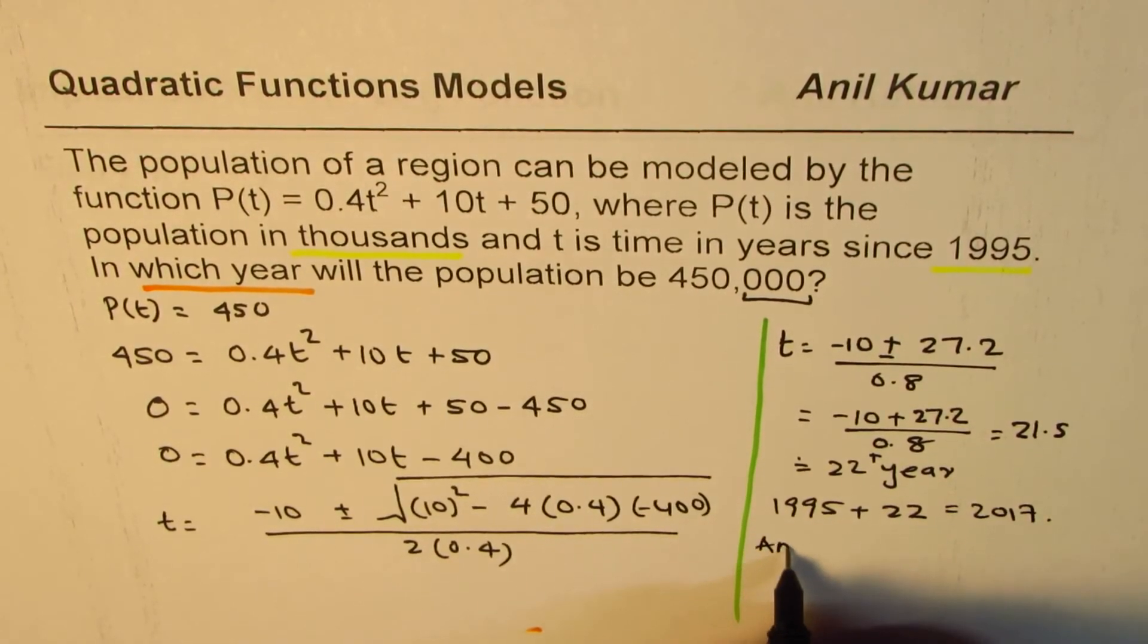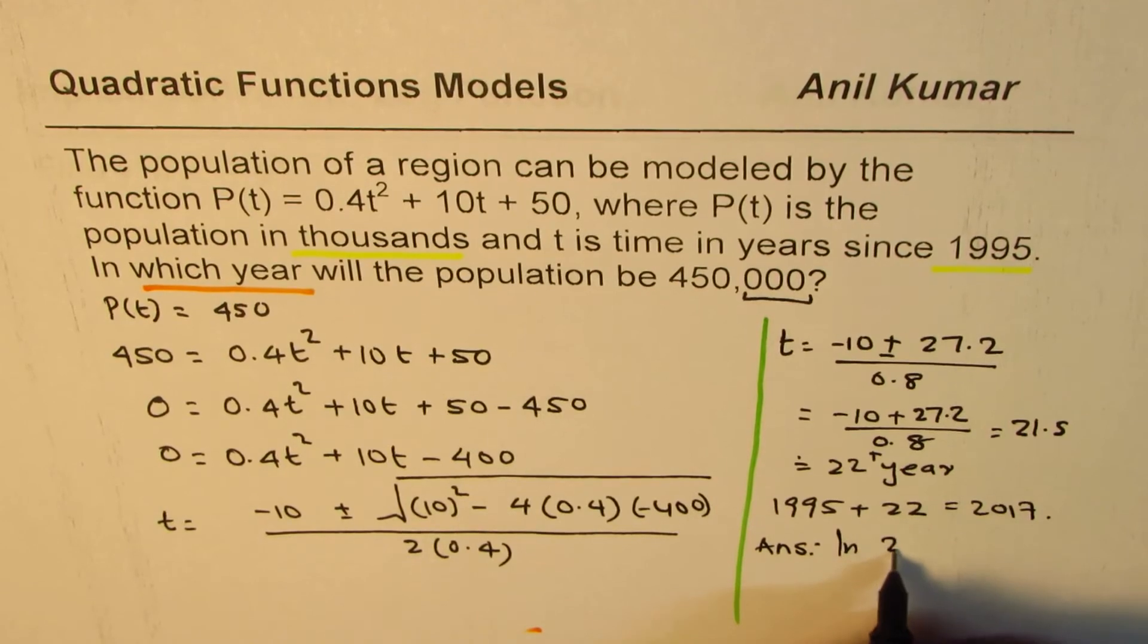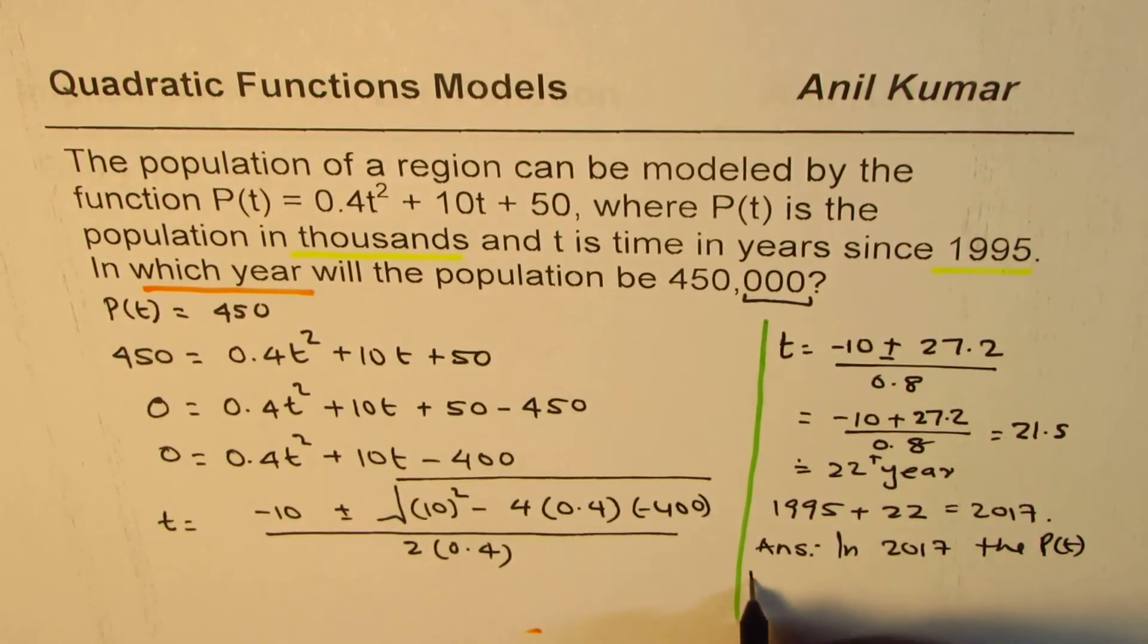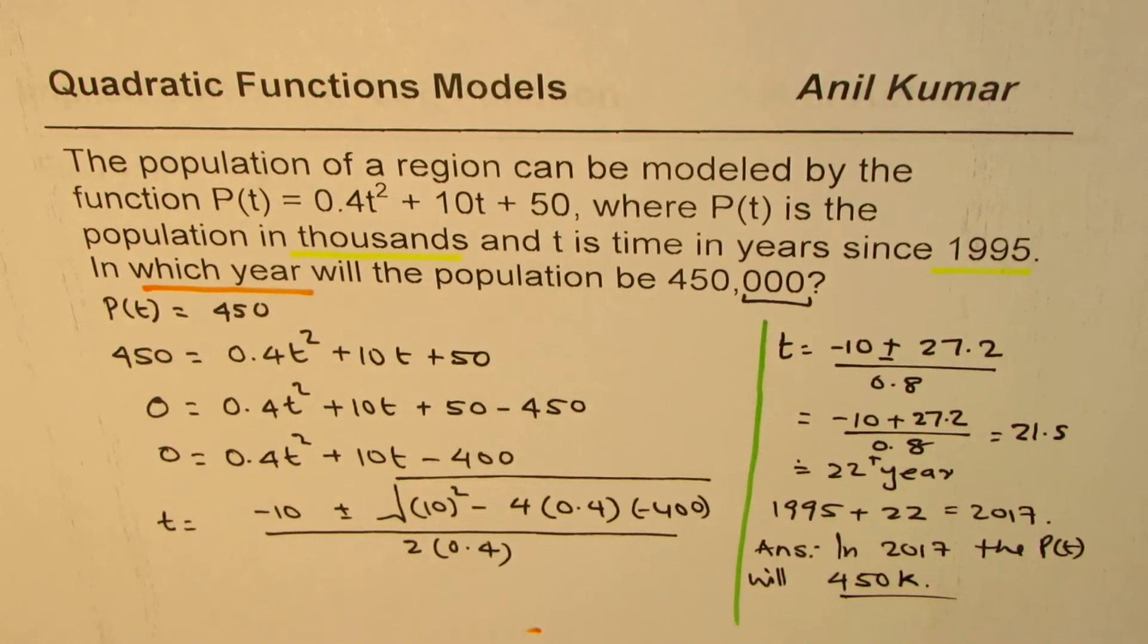So the answer is, in 2017 the population, that means P(t), will be 450,000.